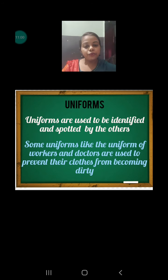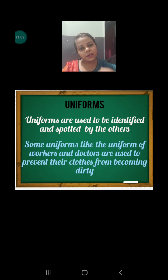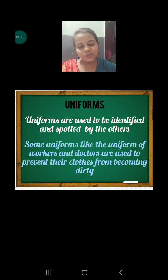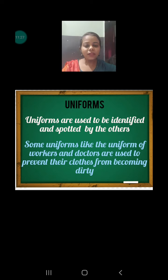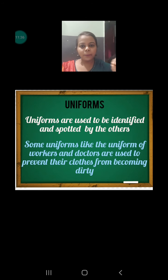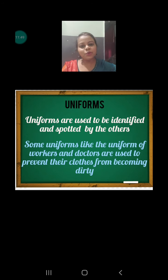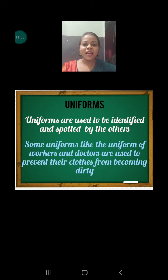Second, some uniforms like those of workers and doctors are used to prevent their clothes from becoming dirty. They wear a coat so that what they are wearing inside does not get wet or dirty, and by this process they can protect their clothes and maintain cleanliness. Third, uniforms create similarity between all persons. Suppose you are a little rich and someone is a little poor — in school you cannot recognize who is poor or who is rich, because all are wearing the same uniform and all students are the same in front of the teachers. That is why you are given a particular uniform, and every profession has a particular uniform. Thank you so much for watching, I hope this will be helpful for you.